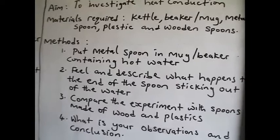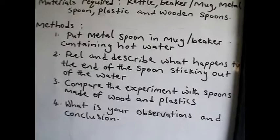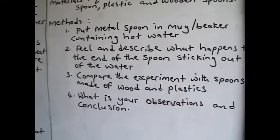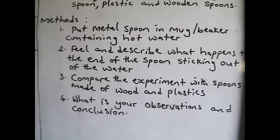So get all these things in place. When they are ready, we now get to the method. In the method, first thing, you put your kettle on fire, put water and boil. When the water is boiled, we now go to the first method.